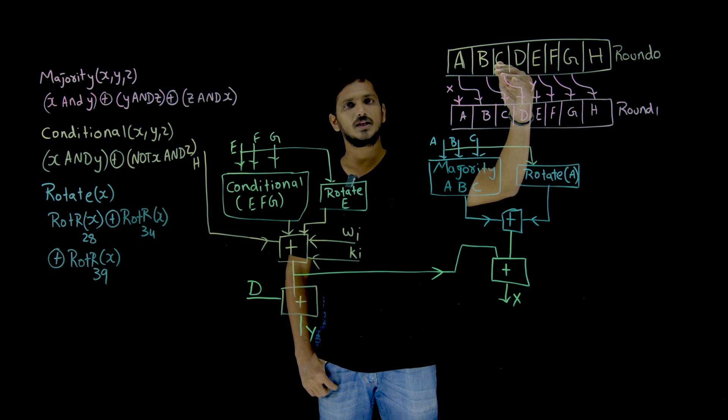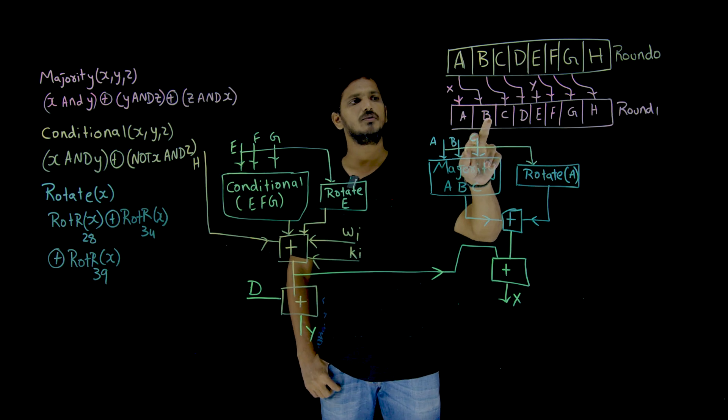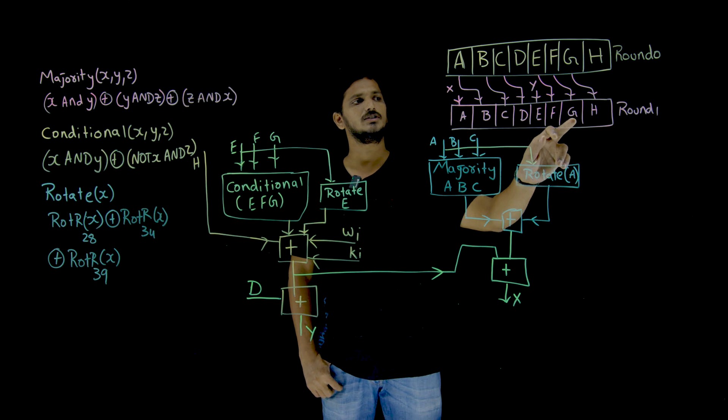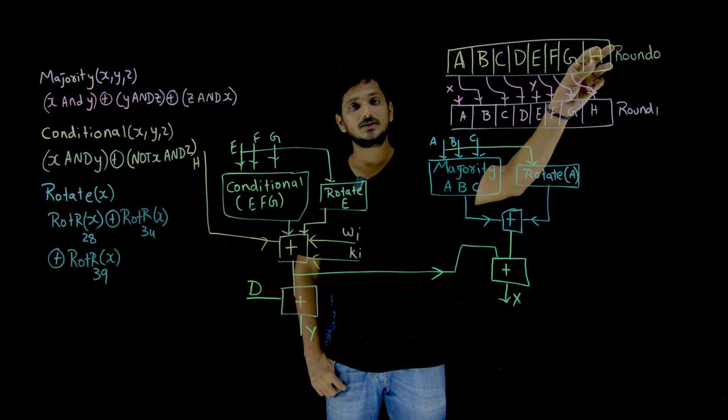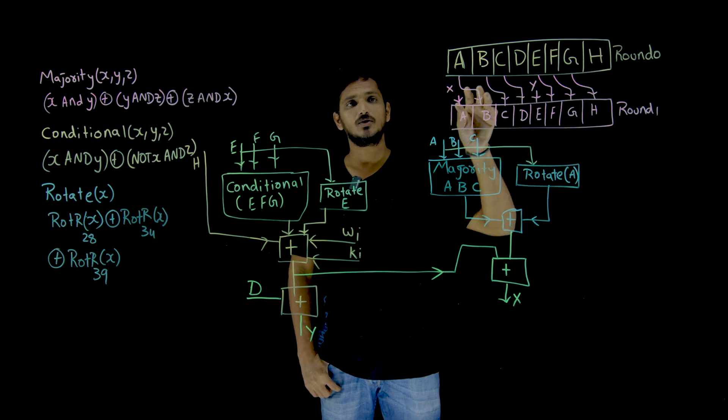Round 0 is going to generate next outputs A1, B1, C1, D1, E1, F1, G1, H1 for round 1. How is it going to generate what happens inside each round? Let us try to understand.